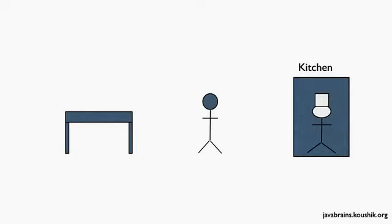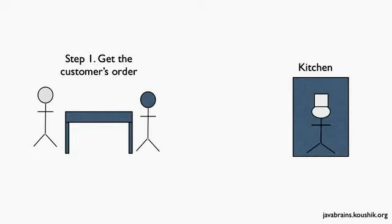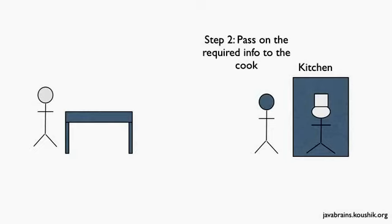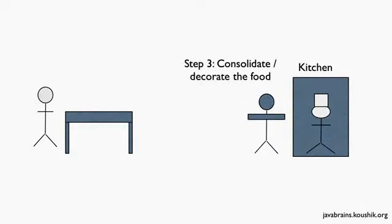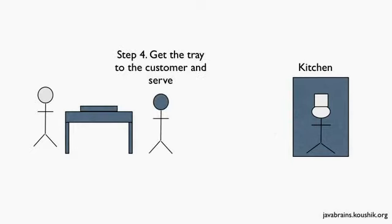So he finds a good cook and hires him for the restaurant. The cook works in the kitchen and is not responsible for anything else apart from preparing the food. Now with the cook in place, the flow changes: when a customer comes in, step one — our stick man gets the customer's order, nothing has changed. Step two, instead of preparing the food himself, he hands the order over to the cook, who actually prepares the food and then hands it back to the stick man. Step three is to consolidate and decorate the food, and step four is to hand it to the customer.